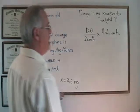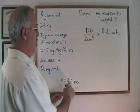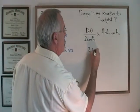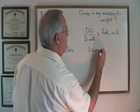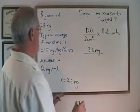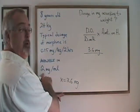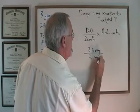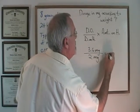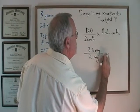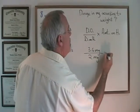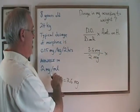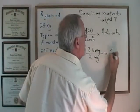In this case, the dose ordered is 3.6 milligrams. The dose on hand is 2 milligrams. We are multiplying by the amount on hand, which is 1 milliliter.